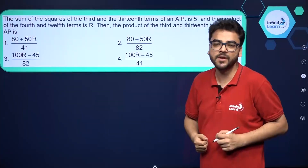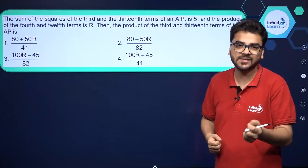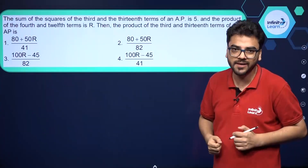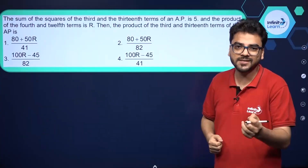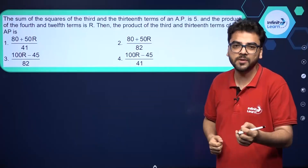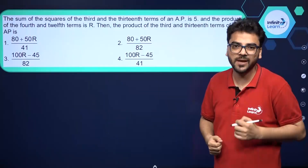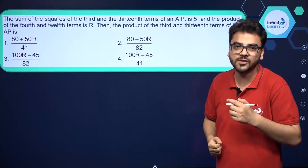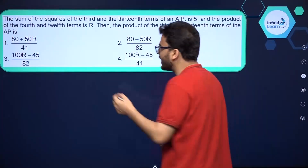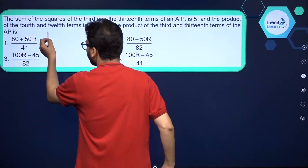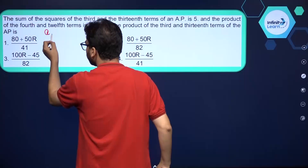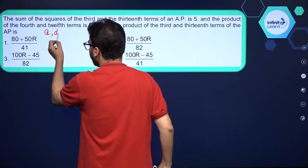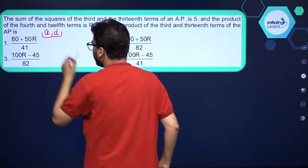This is an AP and we don't know its first term and the common difference. So the first thing is to assume the first term to be A and the common difference to be D.